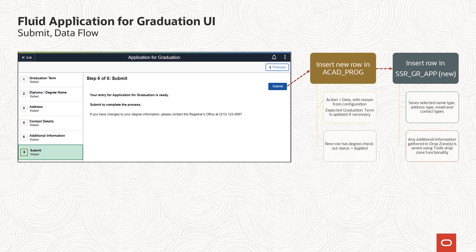New with this fluid feature is the creation of an actual graduation application record. A row is created that includes any name type, address type, and email and phone types. The save will also include any data created or updated in the feature or features you have deployed within the drop zone on the Fluid Additional Information page. If the student selected multiple programs when they began their application, the system will create an application for each program selected.